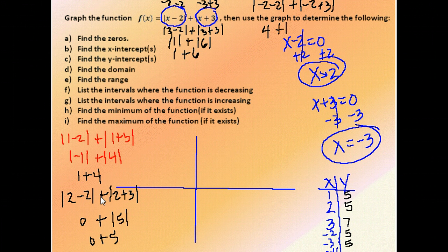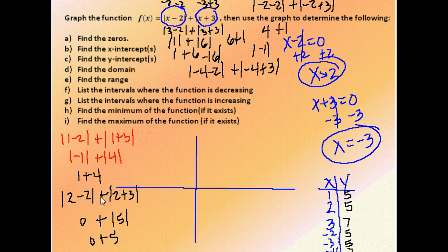And lastly, negative 4. What happens there? So we're running out of room here. Negative 4 minus 2, absolute value, plus negative 4 plus 3, absolute value. I get the absolute value of negative 6 and the absolute value of negative 1. So it makes those values positive when we take the absolute value and we get 6 plus 1 or 7.